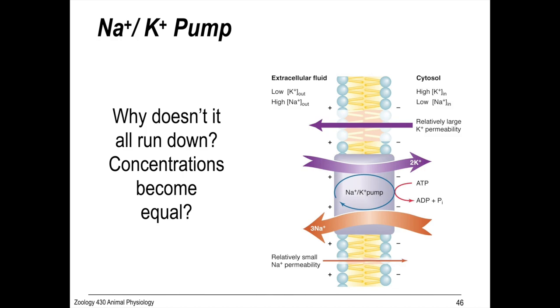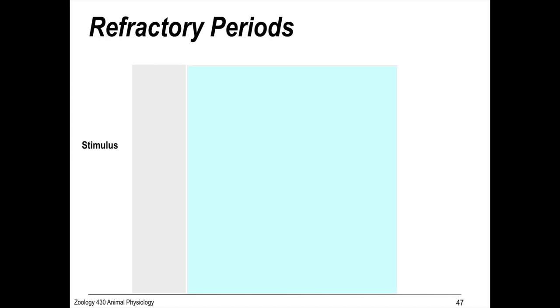So, this is our important player for why it doesn't all just get used up and run down and die. Because it's continually being regenerated by the sodium-potassium antiporter, where three sodiums are sent to the outside and two potassiums are sent to the inside with the action of, with the consumption of ATP. So, this is an active process, active transport.